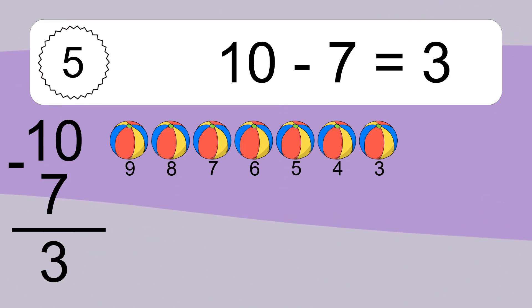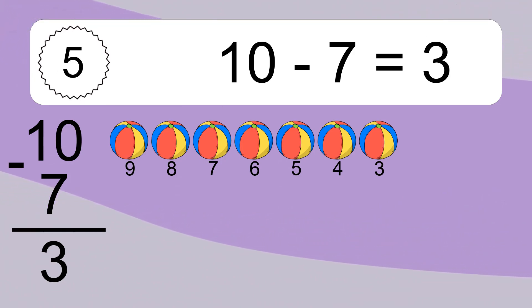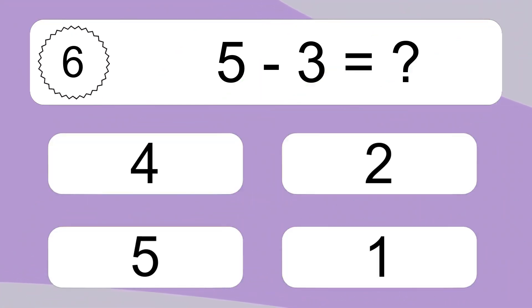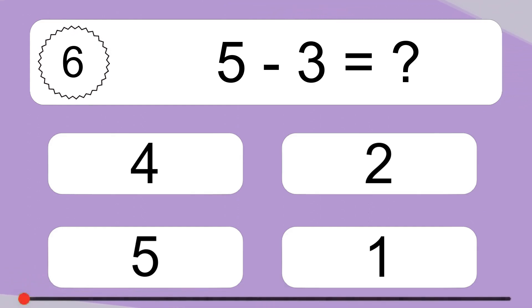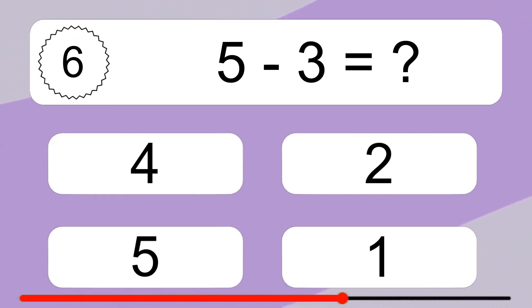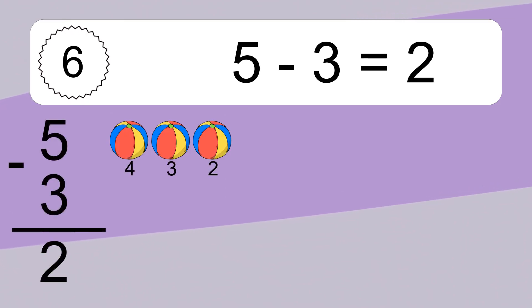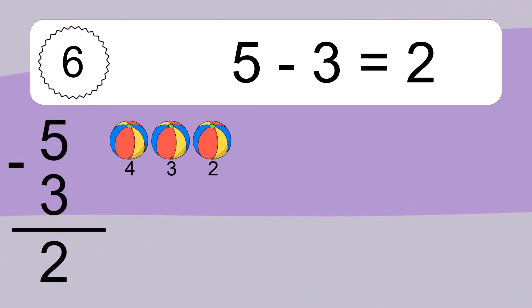5 minus 3 equals what? 5 minus 3 equals 2. Let's count it: 4, 3, 2.